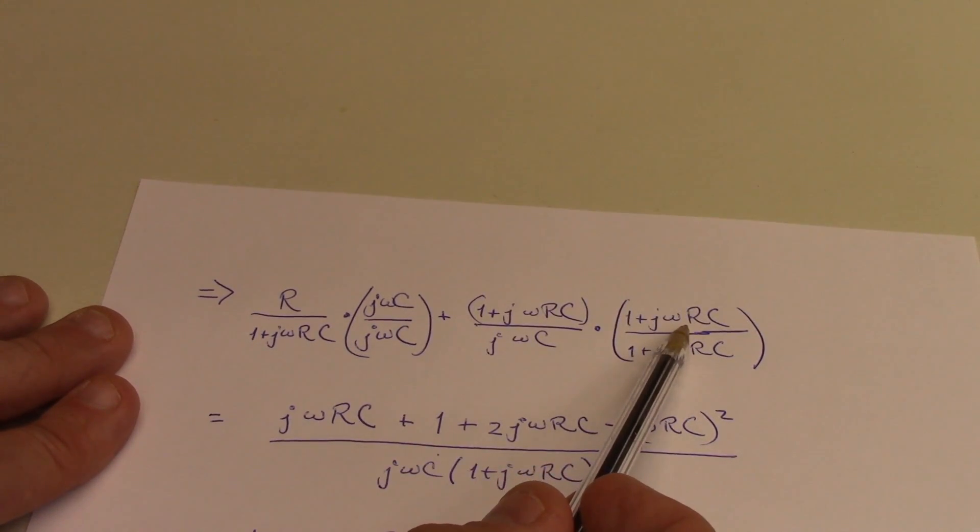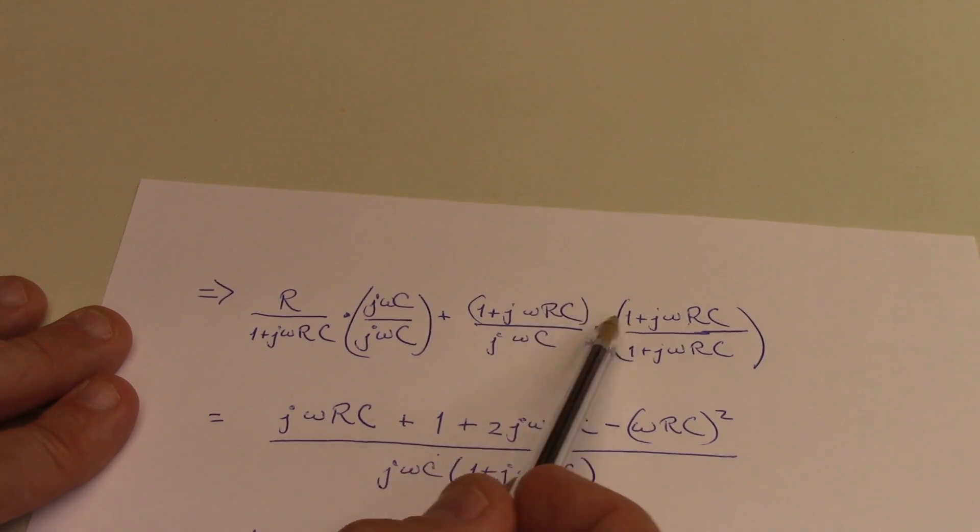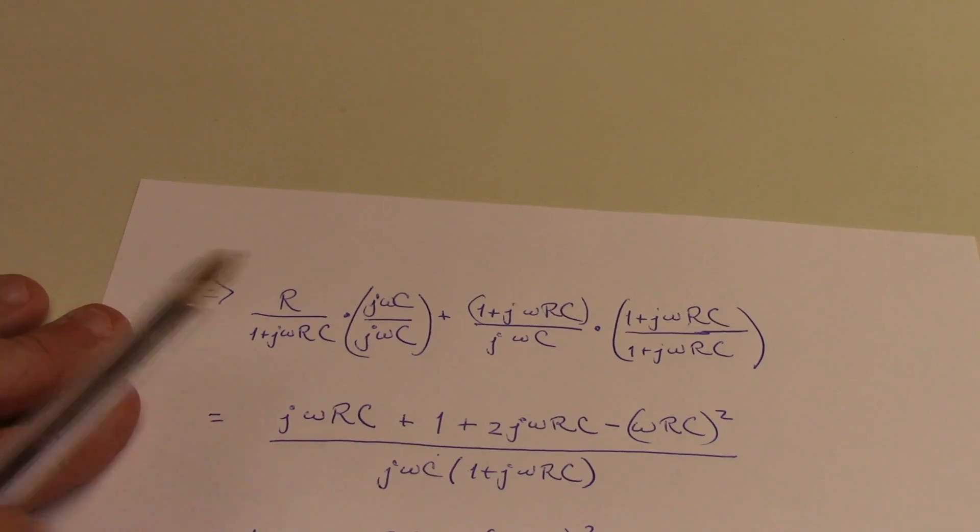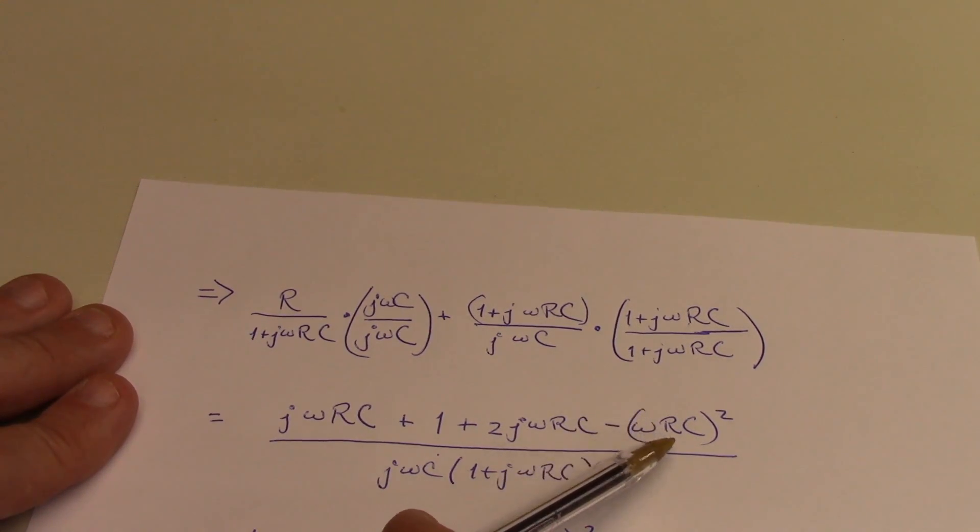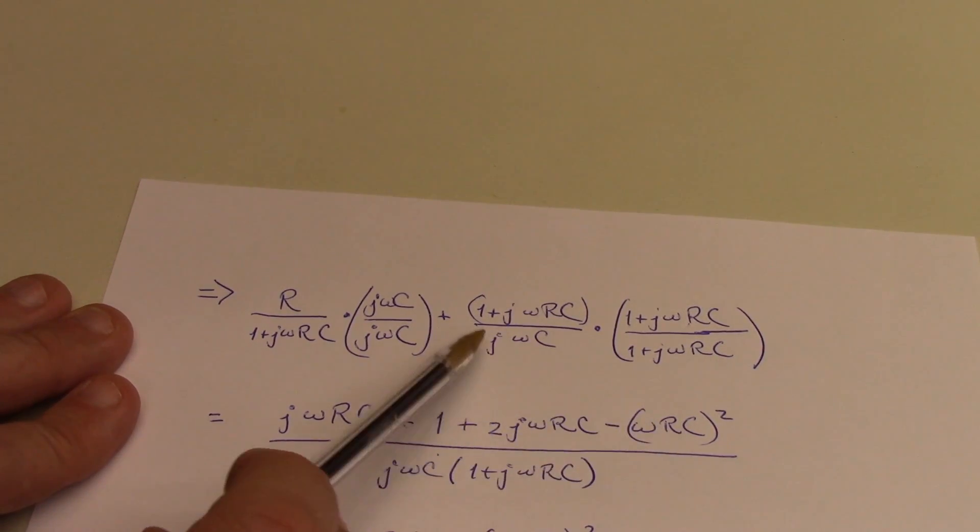Then I'm going to get a factor of j omega rc and another factor of j omega rc. So I've got 2 j omega rc. And then I've got j omega rc times j omega rc, which is j omega rc quantity squared.